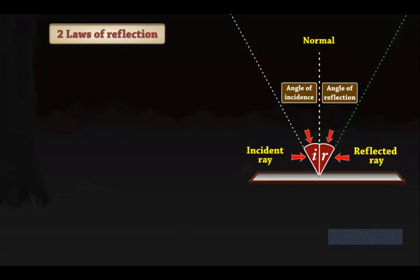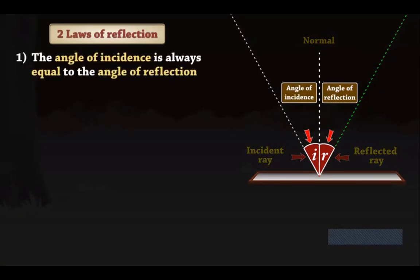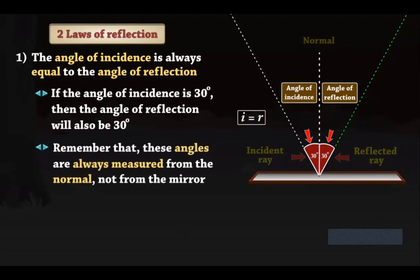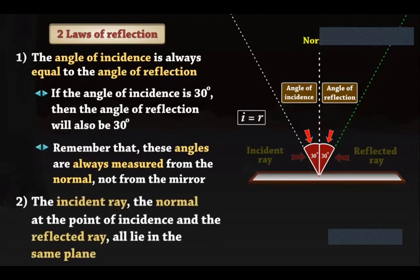Let us learn the two laws of reflection. The angle of incidence is always equal to the angle of reflection. If the angle of incidence is 30 degrees, then the angle of reflection will also be 30 degrees. Remember that these angles are always measured from the normal, not from the mirror. The incident ray, the normal at the point of incidence, and the reflected ray all lie in the same plane.